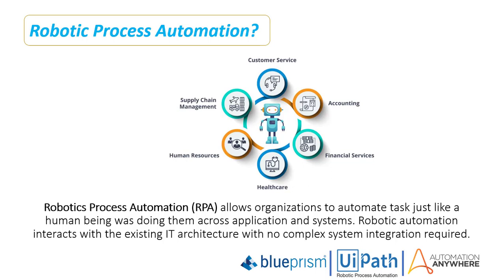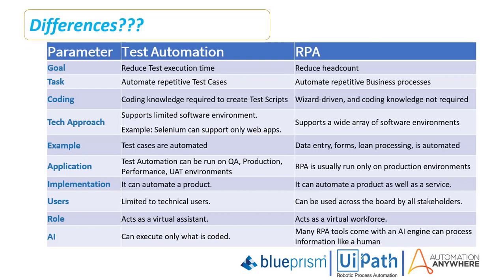Now we will see the major differences between RPA and test automation. The main goal of test automation is to reduce test execution time through automation, whereas RPA's main goal is to reduce headcount through automation. Regarding tasks, test automation automates repetitive test cases, whereas RPA automates repetitive business processes.